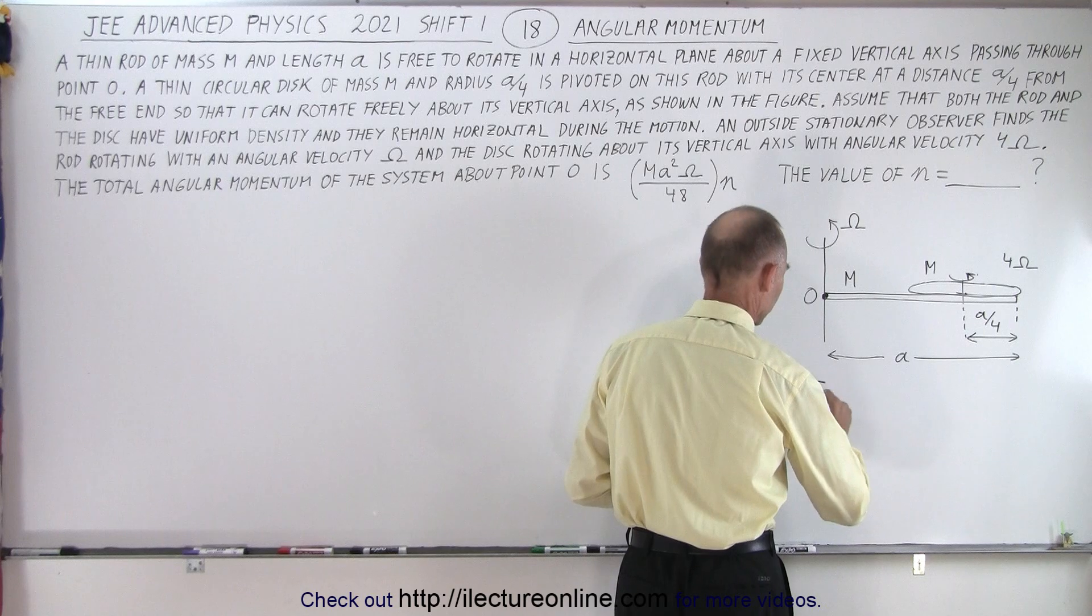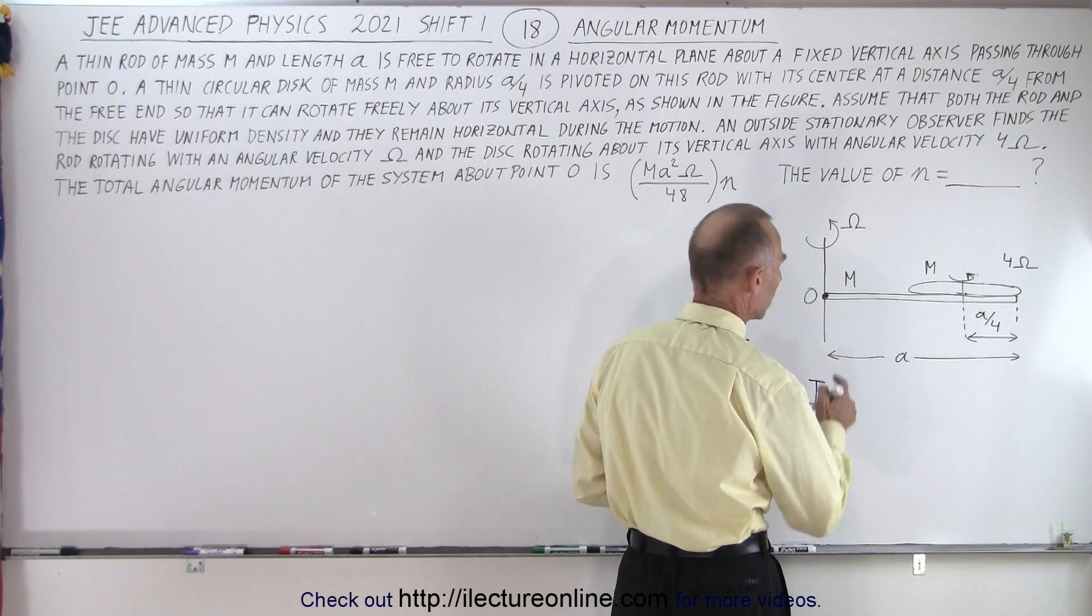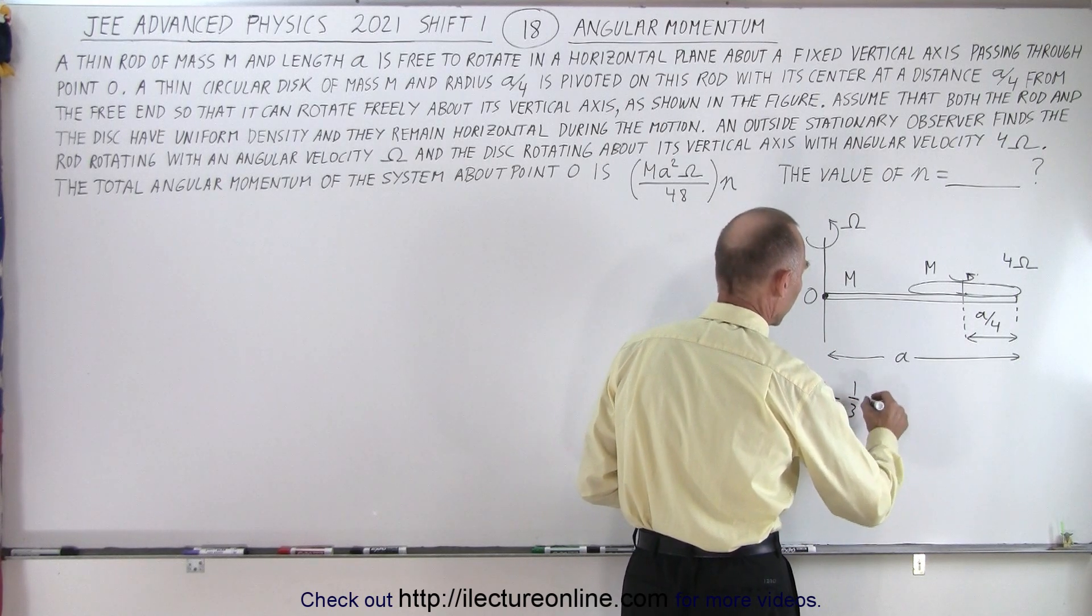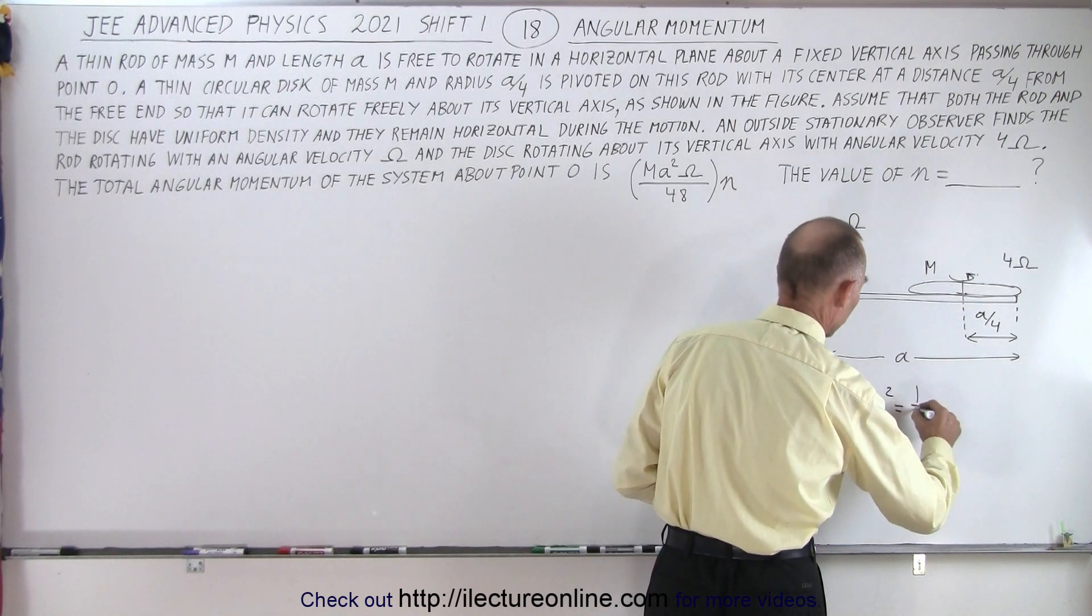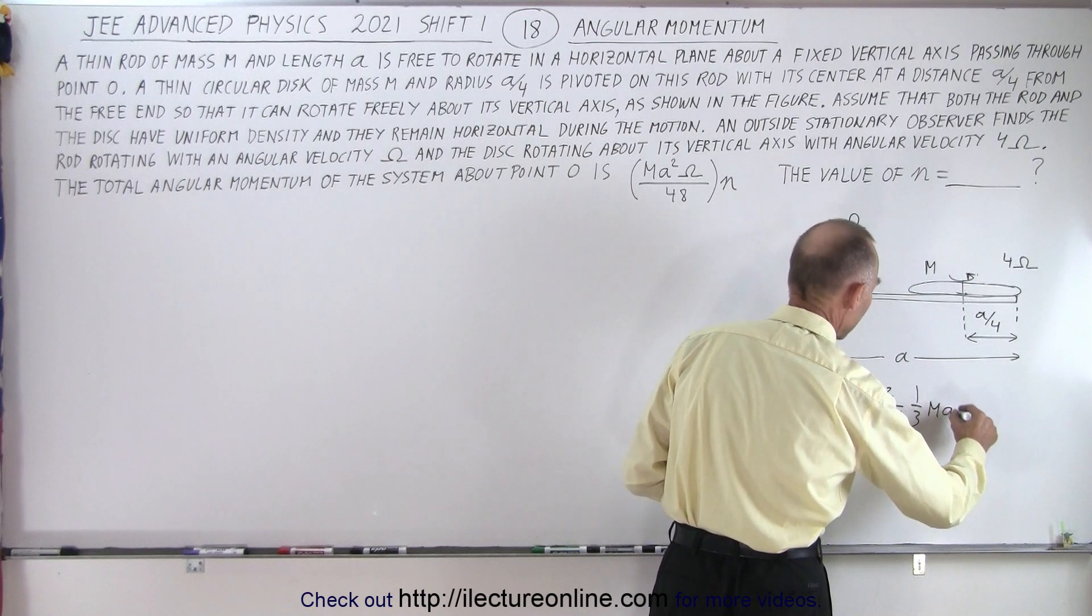So the moment of inertia of the rod would be equal to 1 third the mass times the length squared and the length in this case is a, so this would be 1 third m a squared.